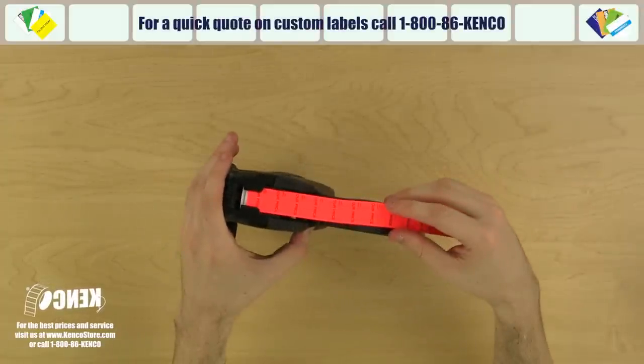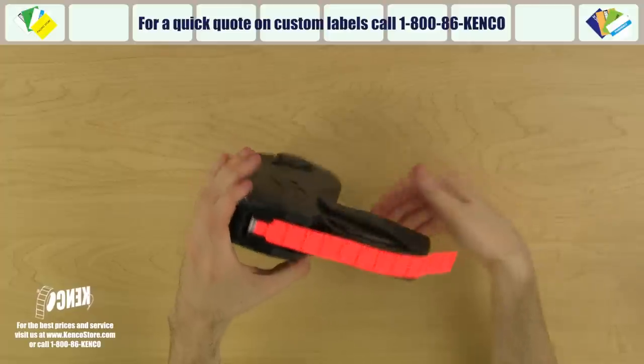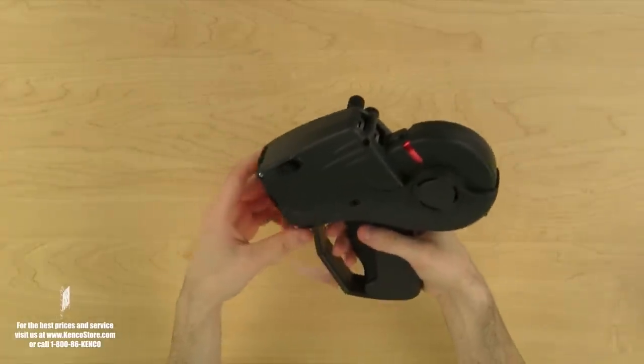Let's pull the labels out of the gun and over this silver roller about six to eight inches, then we can close the label housing cover.